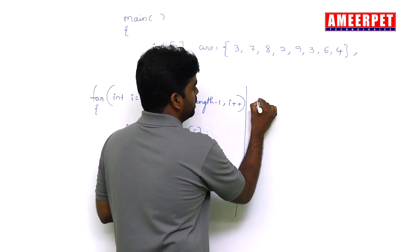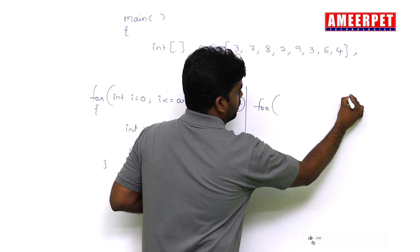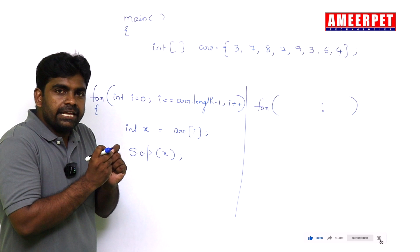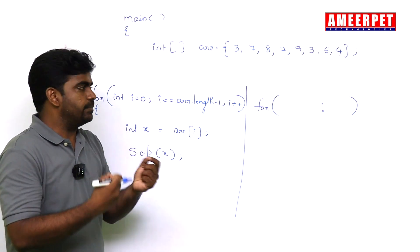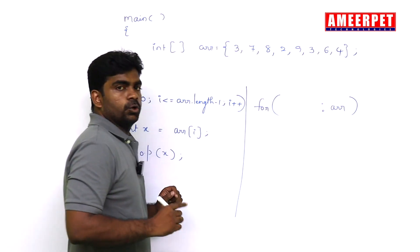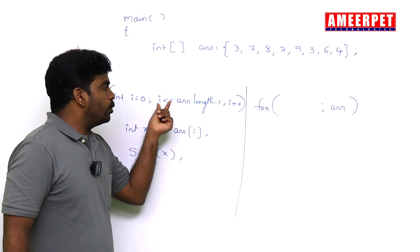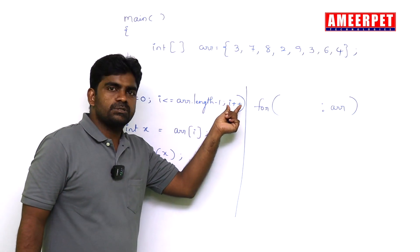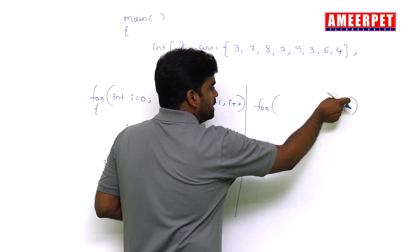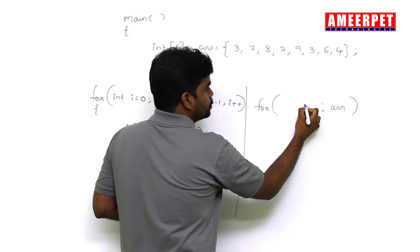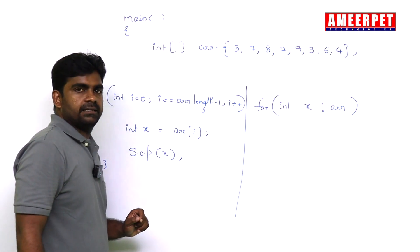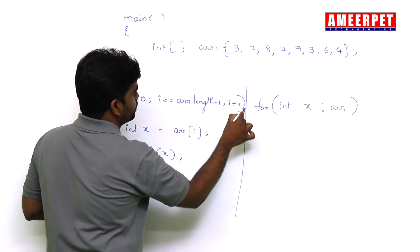But if you want to process all elements of array, instead of writing this much syntax, the simple syntax they have given for that is for-each loop. For, just colon, colon, from which array you want to process the elements, arr. That arr we need to give. No need to specify the starting index, no need to specify the ending index, and no need to specify the modification, increment or decrement.